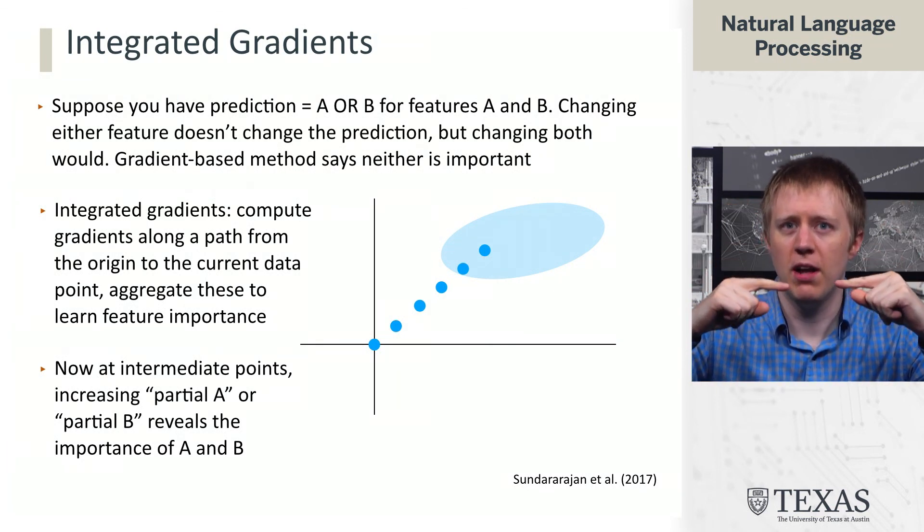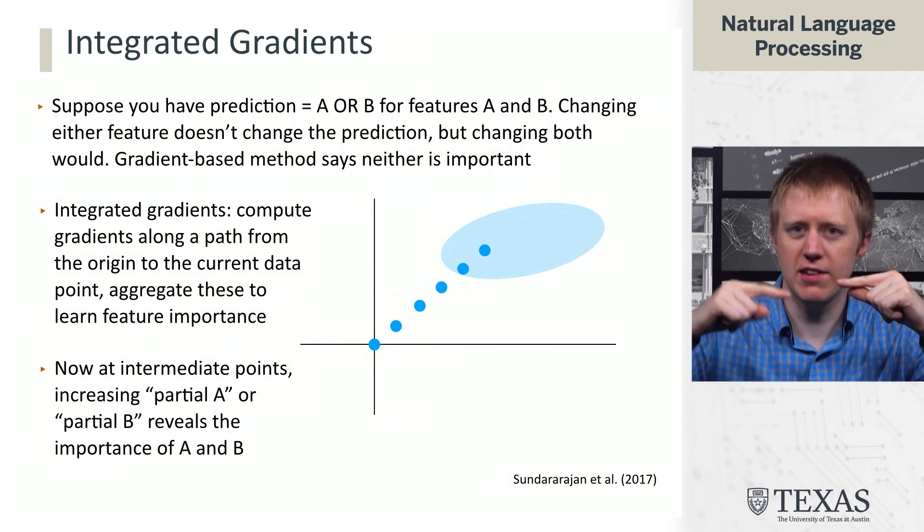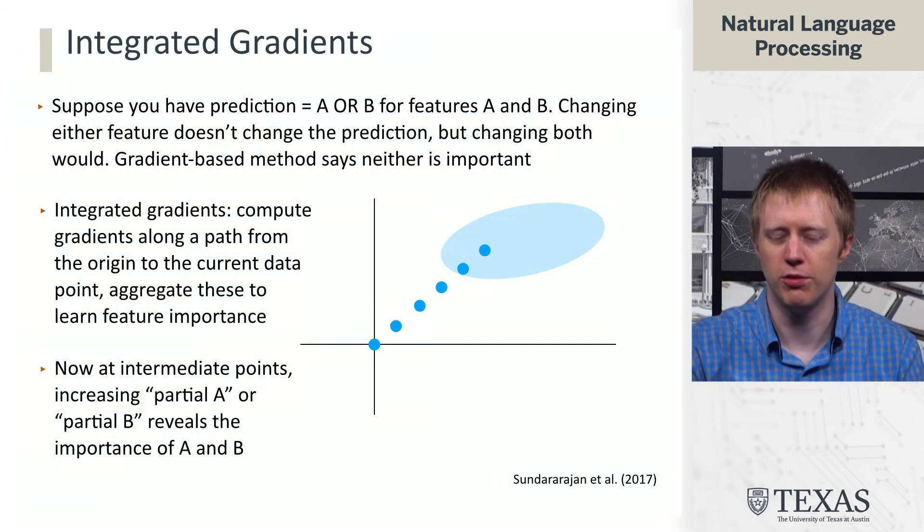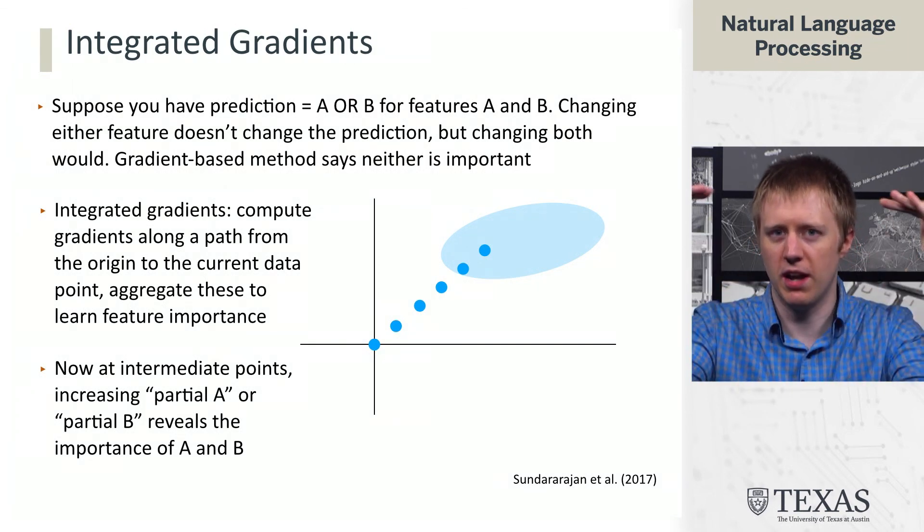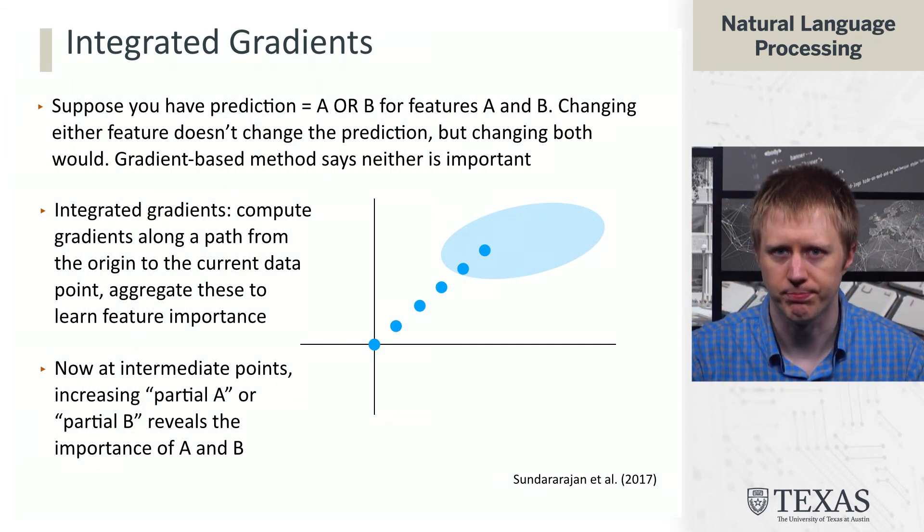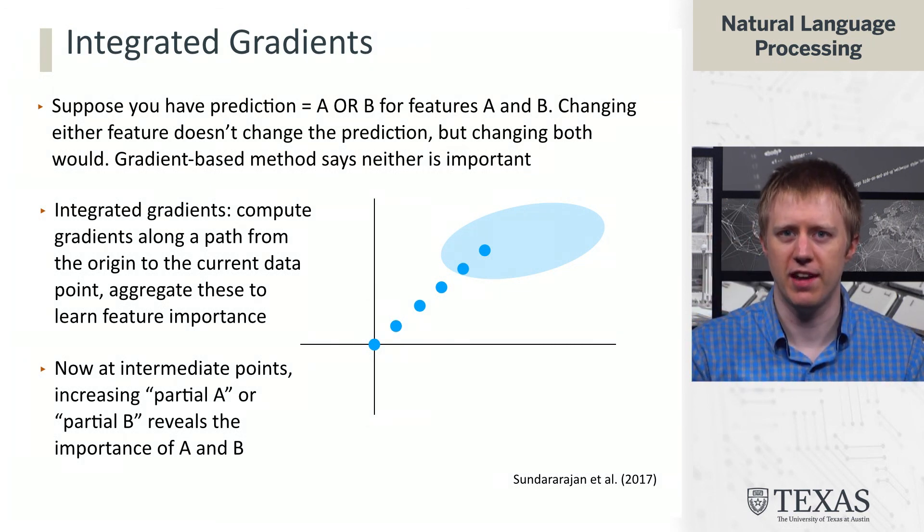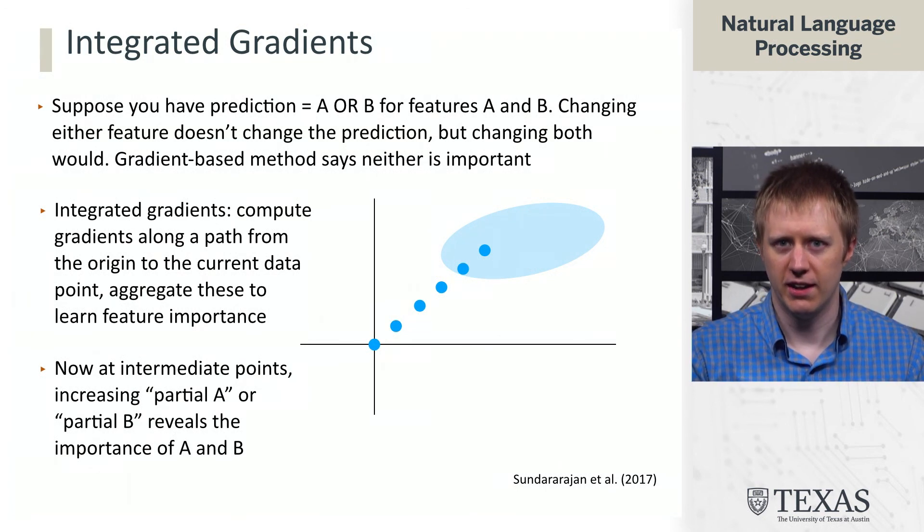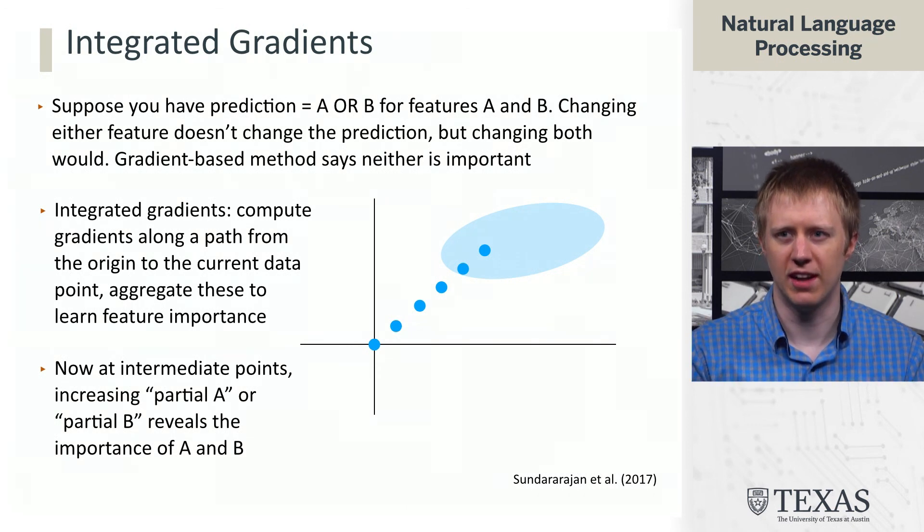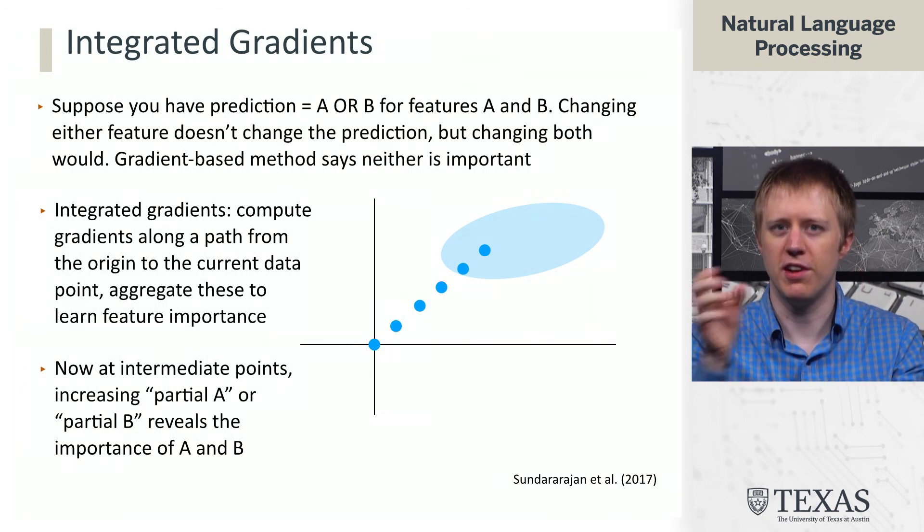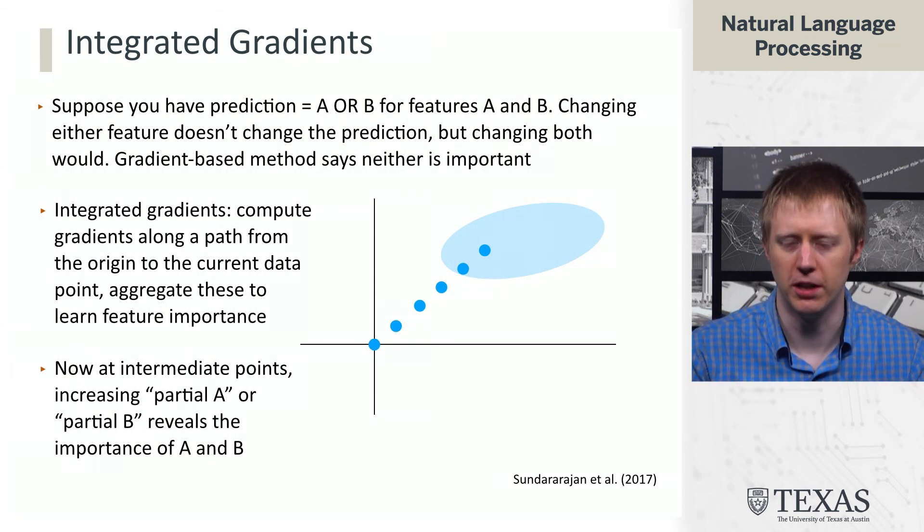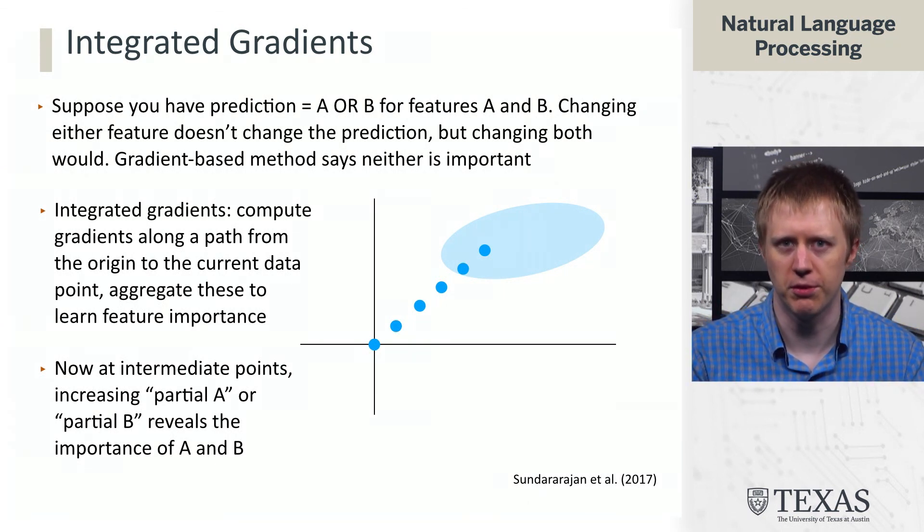And so what's going to happen here is we'll see that rather than everything being kind of saturated, along the way we'll say, well actually if we changed B here and raised it a little bit, that would improve the prediction. Or if we changed A here, that would improve the prediction because we're not thinking about it so locally as every other feature is here and I'm just missing this one, which doesn't do a good job when you have kind of multiple independent signals that tell us what the right thing is.